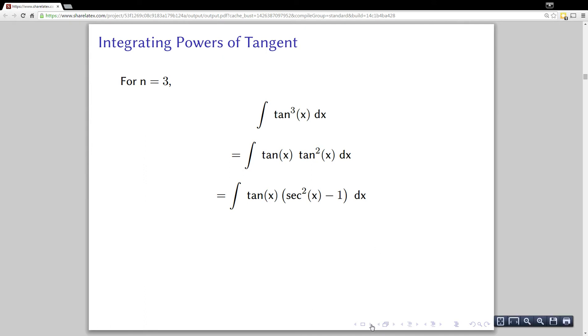Then distribute the tan x through the parentheses and I wind up with two integrals. This first one is a substitution with u equals tan x, and you can see secant squared would be the du there, the derivative of tan. So this one winds up to be 1 half tan squared, and then minus the integral of tan x, which is natural log absolute value of secant x plus some constant c.